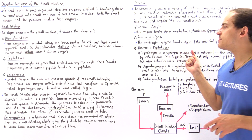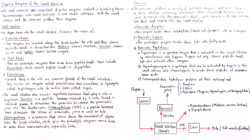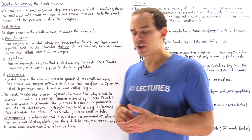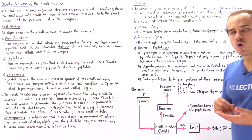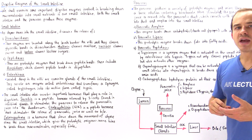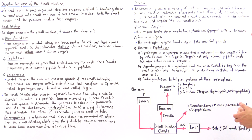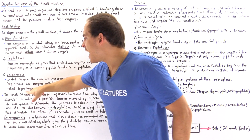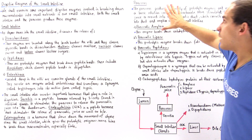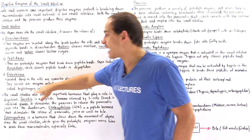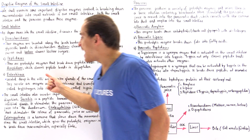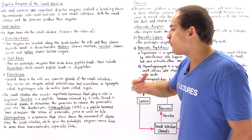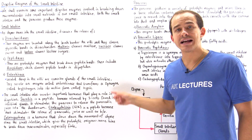Finally, we have the pancreatic peptidases. Three important types to be familiar with are trypsinogen, chymotrypsinogen, and carboxypeptidase. Trypsinogen is the zymogen we spoke of earlier. The pancreas produces trypsinogen and when enterokinase mixes with it, it cleaves trypsinogen and forms the active form known as trypsin.